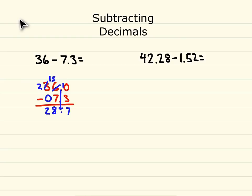Again, the problem's not too hard if you think about it in terms of its base 10 values. Let's come over here to our other problem now. We have 42 and 28 hundredths minus 1 and 52 hundredths. We'll think again how we need to line this up.